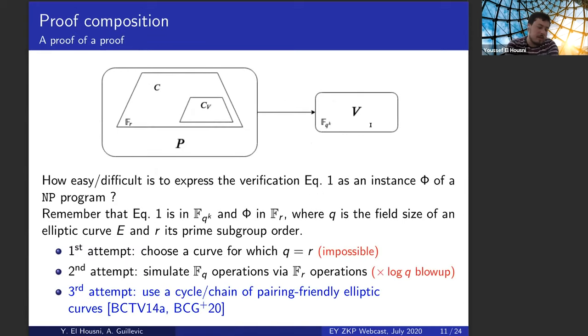Let's see the arithmetic side of things. So how easy and difficult is to express this equation one as an instance of an NP program. So remember that equation one is a pairing product check. So it takes place in a k-th extension of field FQ and to generate the proof we work in the subgroup of order r of the elliptic curve. So q is the size of the field. R is the subgroup of the curve. So here we have obviously an arithmetic mismatch. So one first attempt to solve this is to choose a curve for which q is equal to r. So this is unfortunately impossible for pairing-friendly elliptic curves. The second attempt will be to simulate FQ operations via FR operations. So this is possible, but we would introduce a blowup, an overhead of size log q over r with q and r cryptographic, a big cryptographic number.